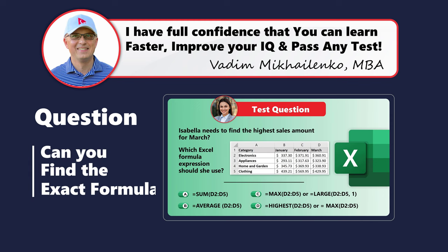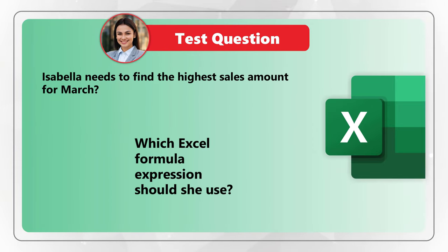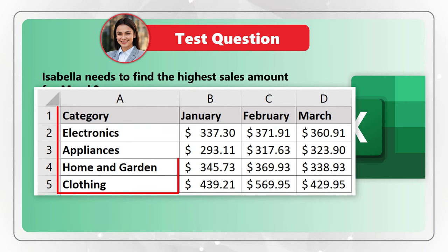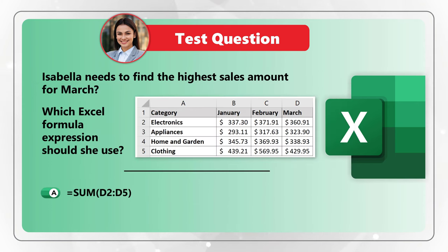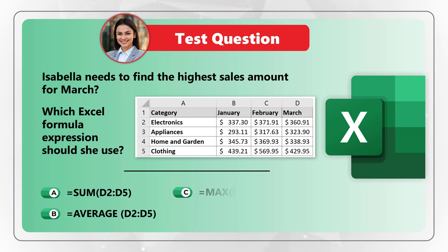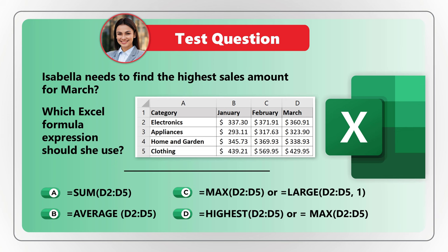Here's an amazing question to test your knowledge of basic Excel formulas. Isabella needs to find the maximum sales figure for March. The dataset shows sales for electronics, appliances, home and garden, and clothing across January, February, and March. You need to select one of four choices: Choice A, =SUM(D2:D5); Choice B, =AVERAGE(D2:D5); Choice C, =MAX(D2:D5) or =LARGE(D2:D5,1); Choice D, =HIGHEST(D2:D5) or =MAX(D2:D5).